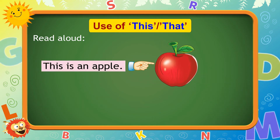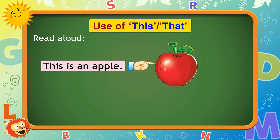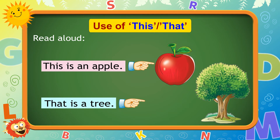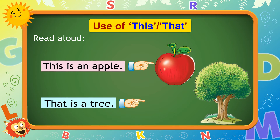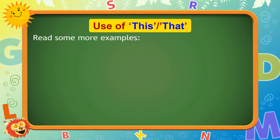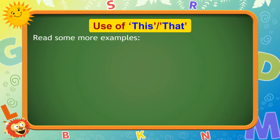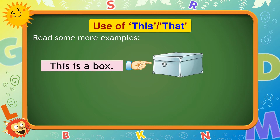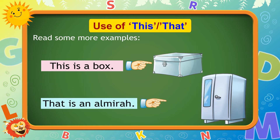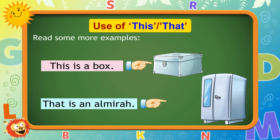This is an apple. That is a tree. Read some more examples. This is a box. That is an almira.